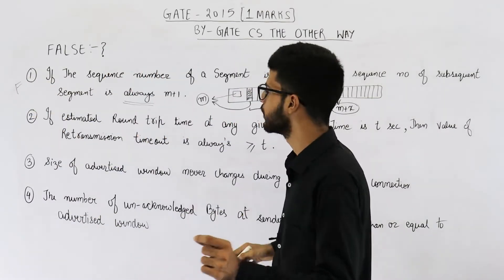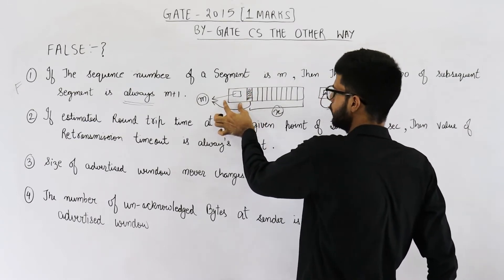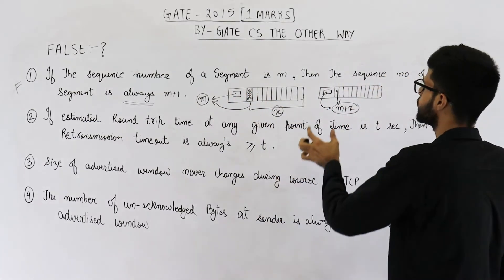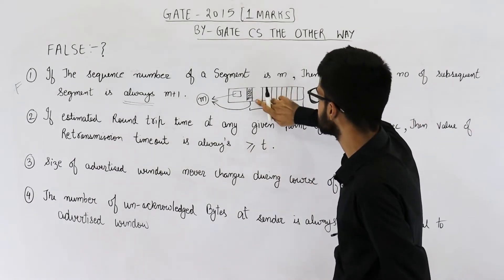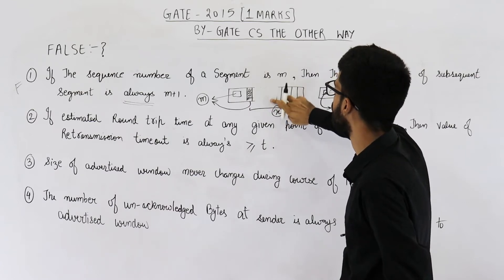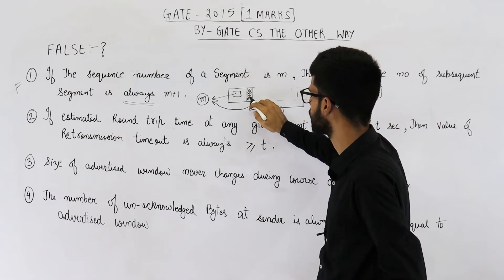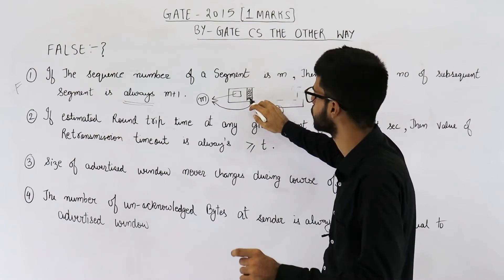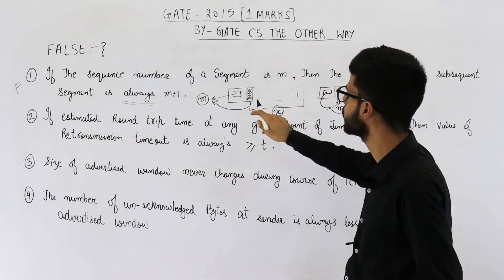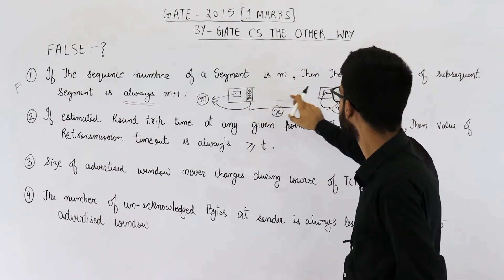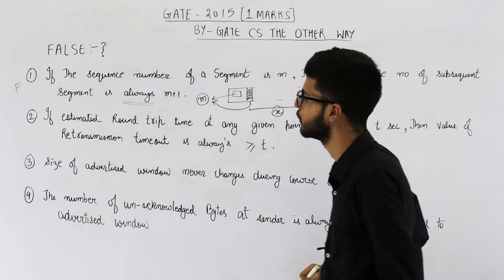In some cases, it is possible that the sequence number of the next segment is m+1 — specifically if the current segment contains only one byte of data with sequence number m. In that case, the next segment would indeed have sequence number m+1.